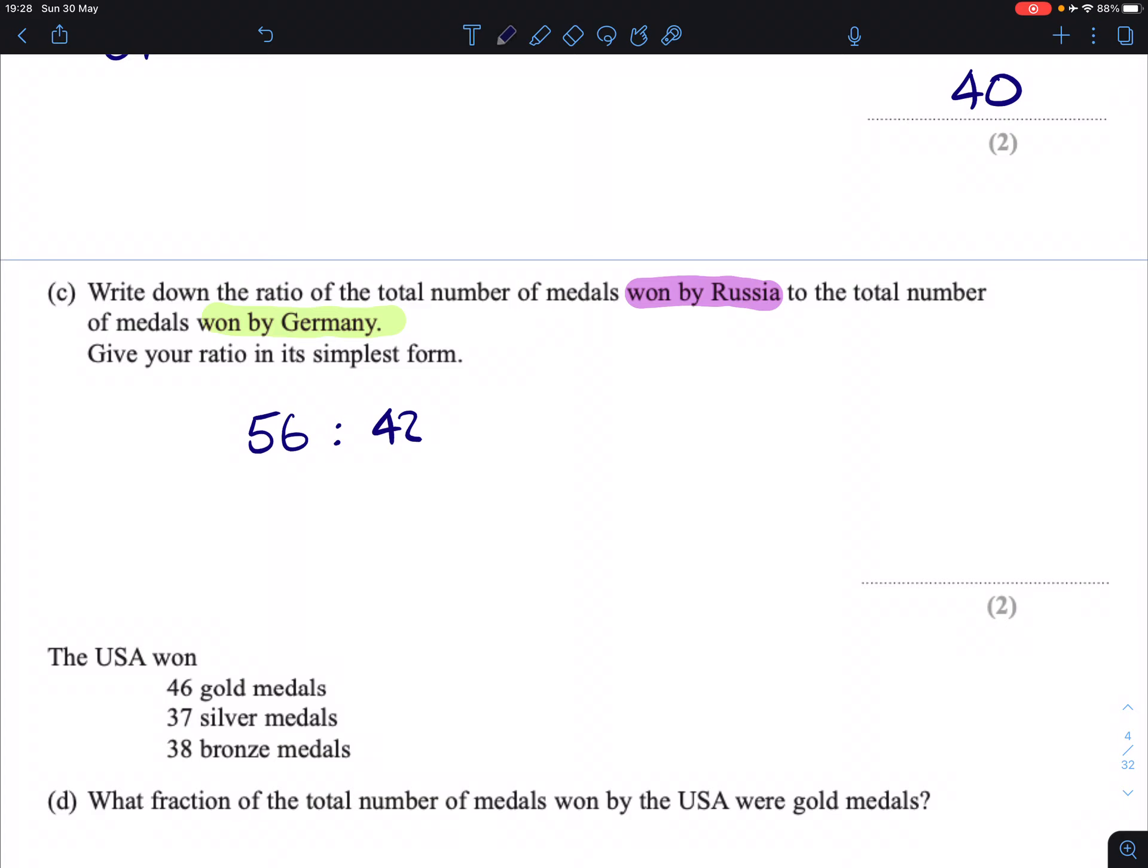The order in which it says the ratio, it says won by Russia to Germany basically, so the 56 has to come first. That's important. Then we simplify a ratio similarly to how we simplify a fraction. We can divide both sides by a number. The fact that these are both even, we can divide both sides by 2, which will give us 28 to 21. Then we can divide both sides by 7, giving us 4 to 3 as our final answer.